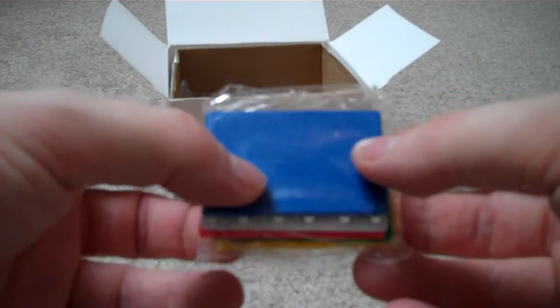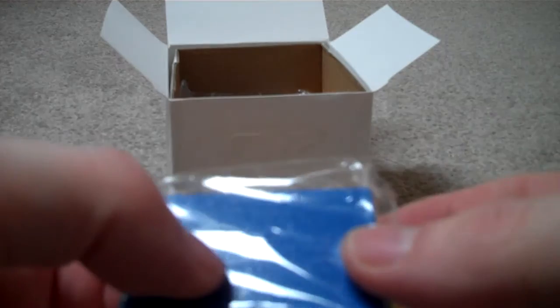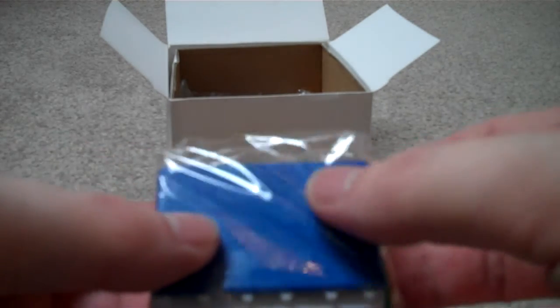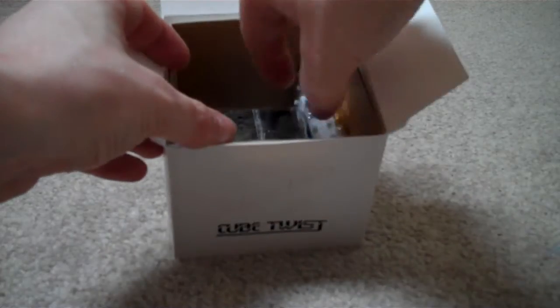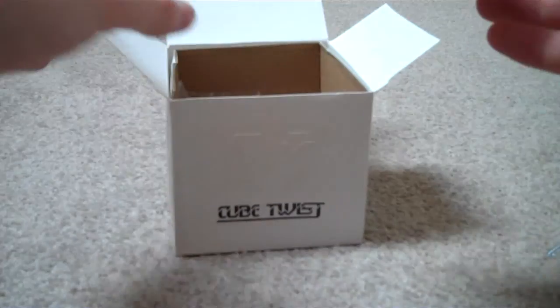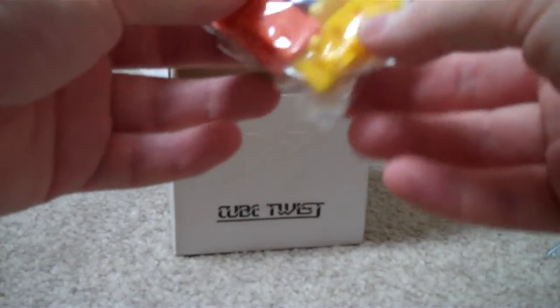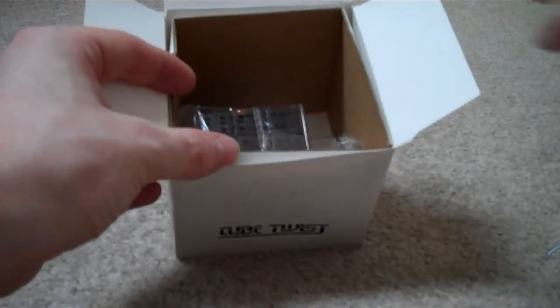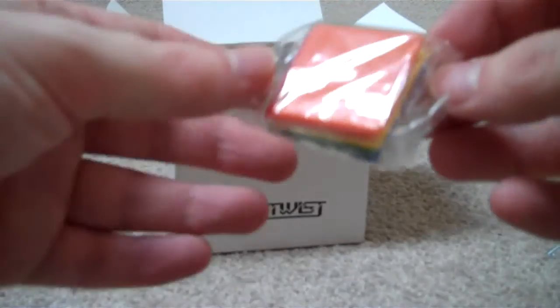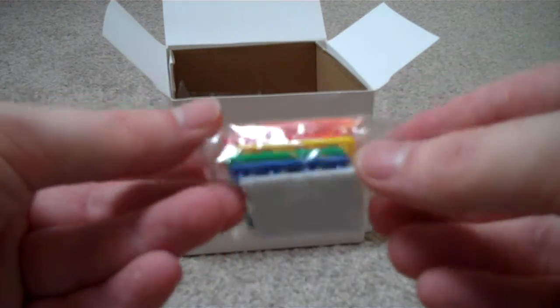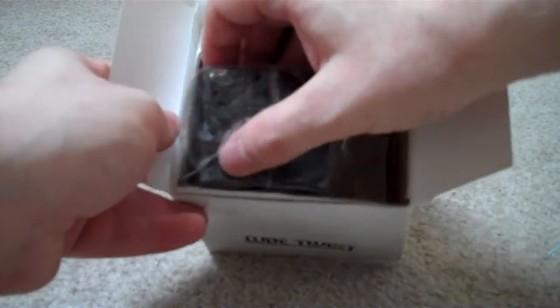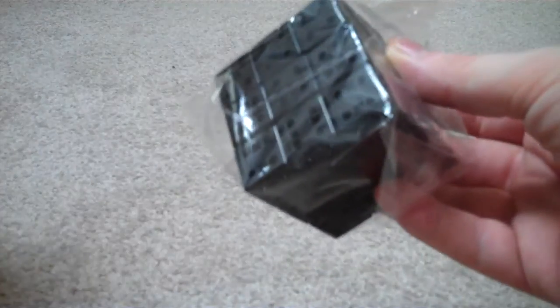And on some of them, or all of them, it probably won't show up on camera, but it says it's got like Cube Twist engraved on them. And they're textured as well. So that means you'd be able to grip them better than if they wasn't textured. There's some more. And there's the last bag.